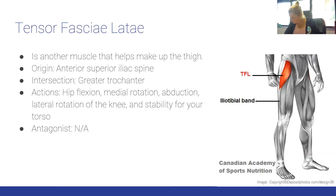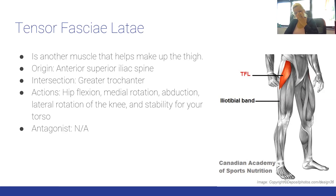The tensor fasciae latae is another thigh muscle. Origin: anterior superior iliac spine. Insertion: greater trochanter. Actions: hip flexion, medial rotation, abduction, lateral rotation of the knee, and helps stabilize the torso. No antagonist was identified.